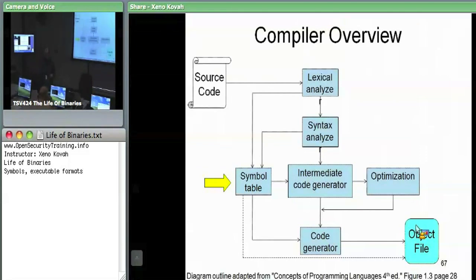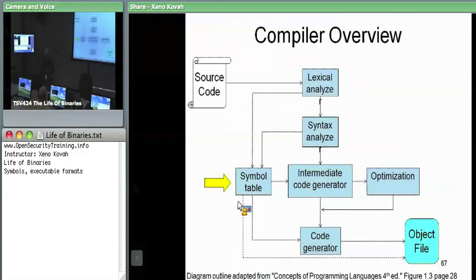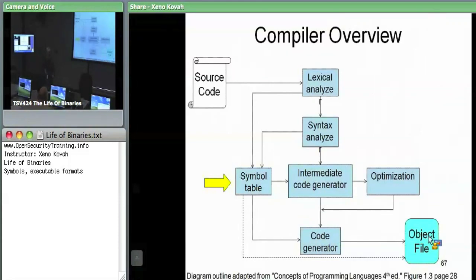The symbol table ultimately can find its way into the object file. The information that ends up in the object file is specifically there to help the linker find symbols that are undefined within the given object file.